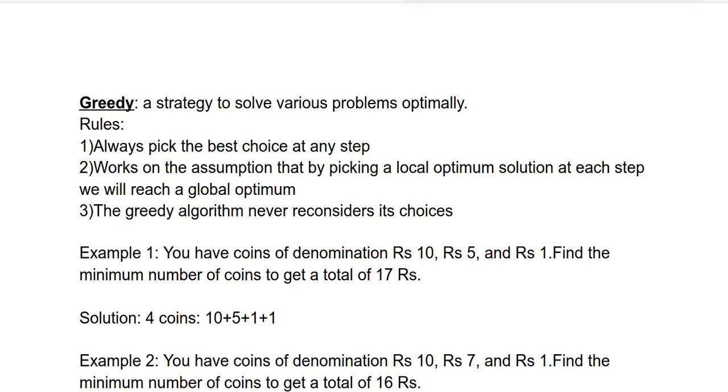You have coins of denomination Rs 10, Rs 5, and Rs 1. Find the minimum number of coins to get a total of 17 rupees. Using the greedy approach, we will first select Rs 10 coin because it is of highest denomination. For the remaining 7 rupees we will select 5 rupees coin, and for the remaining 2 rupees we will select 2 coins of 1 rupee each. So in total we have 4 coins.